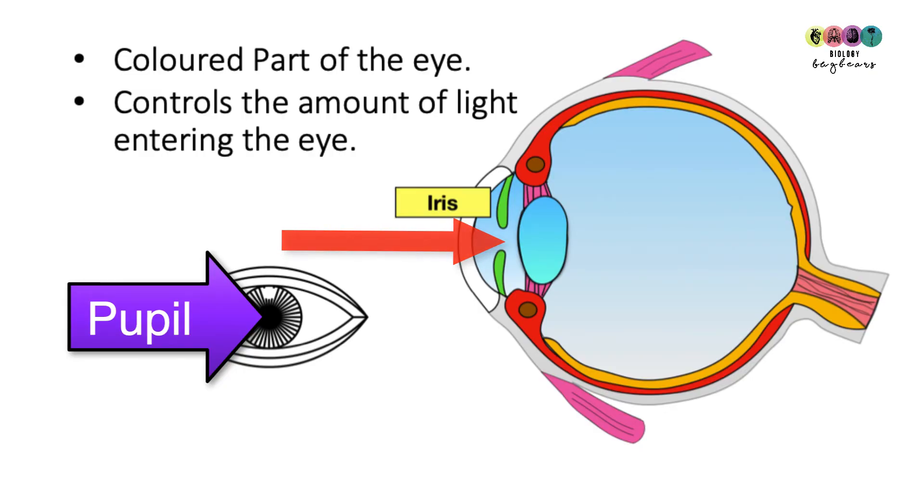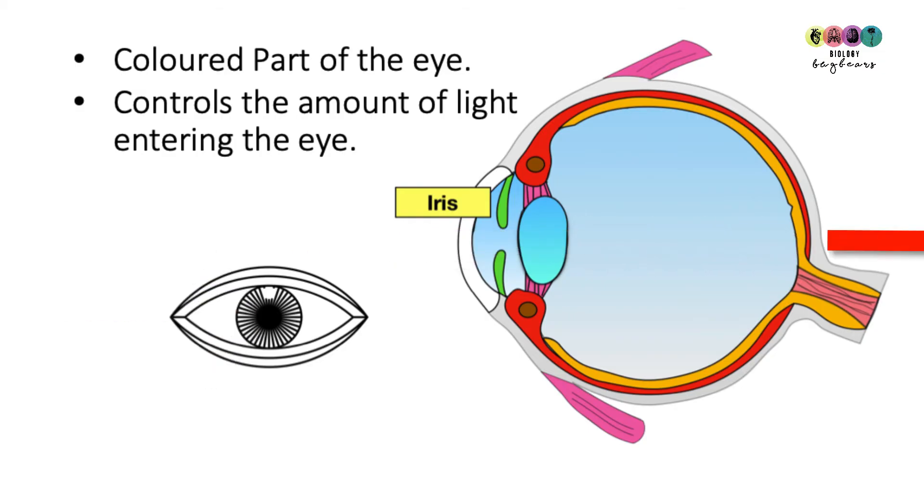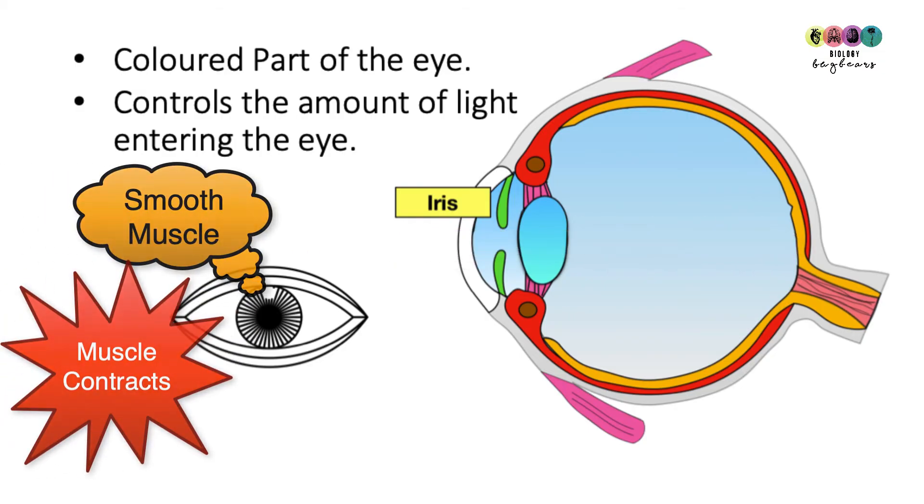So how does the iris control the amount of light that enters into the back of the eye? Well it's all to do with the smooth muscle. The iris contains smooth muscle and you know that muscle can contract, so when this muscle contracts it alters the diameter of the pupil and that varies the amount of light that can get into the back of the eye.